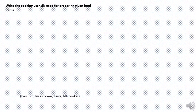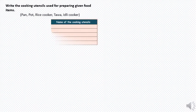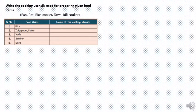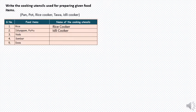Write the cooking utensils used for preparing given food items. Rice — we use a rice cooker. Idli, appam, puttu — we use an idli cooker. For vada we use a pan. For sambar we use a pot. Dosa — we use a tawa.